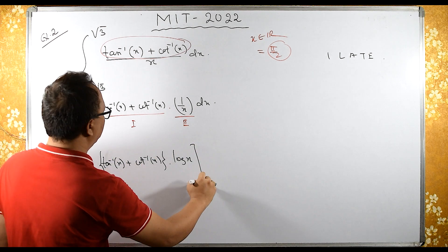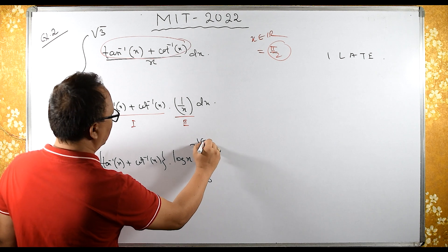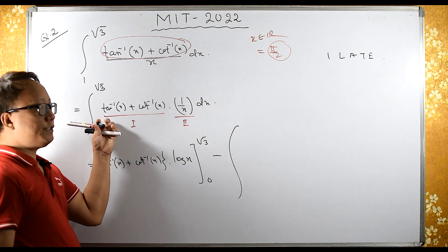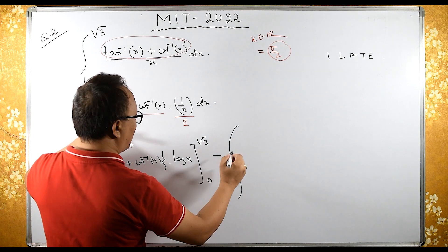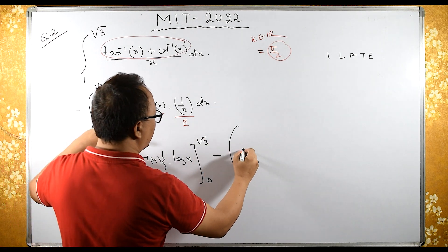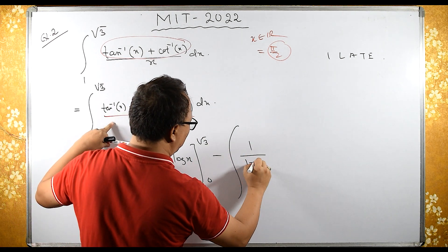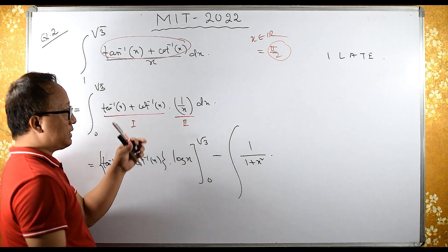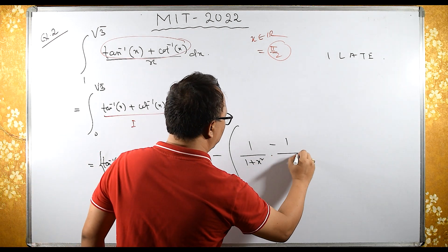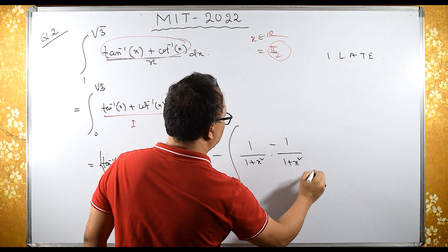Then the limit is from 0 to root 3 minus integral of differentiation of the first function. d by dx of tan inverse x is 1 upon 1 plus x square, and cot inverse is minus 1 upon 1 plus x square.